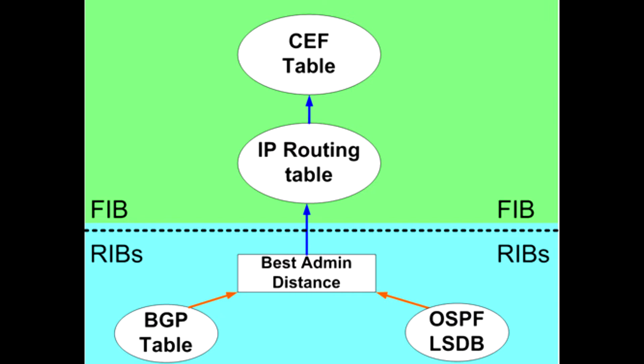RIB is, in essence, a comprehensive database, housing a myriad of routing entries. Each routing entry includes vital data such as the network destination, associated subnet mask, next-hop IP address, and various attributes relevant to routing decisions.